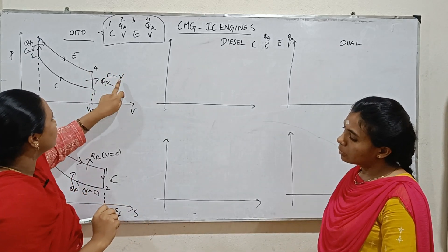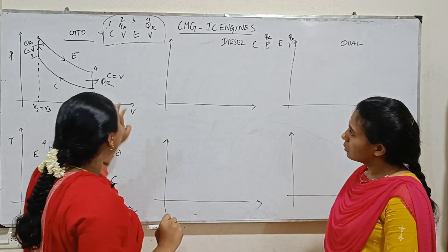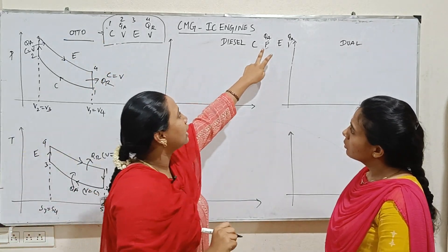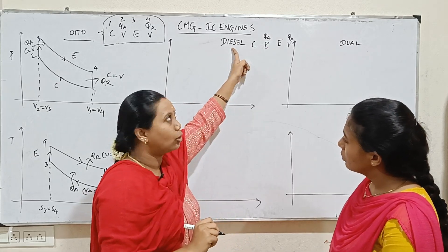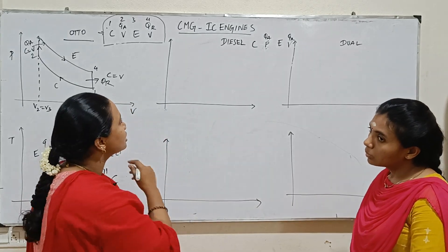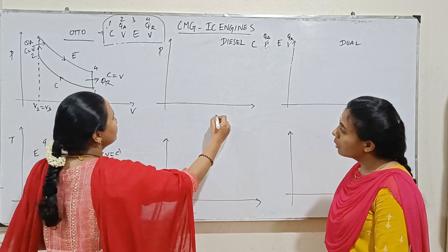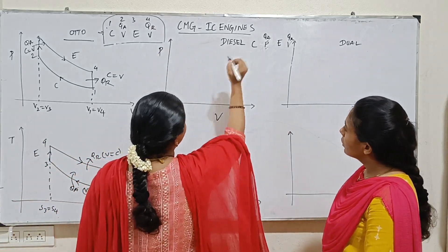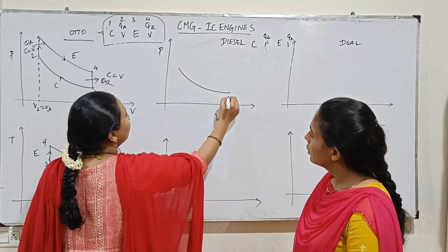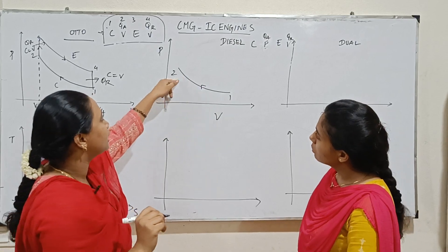In the Diesel cycle, heat addition is at constant pressure — unlike the Otto cycle where heat addition is at constant volume. Heat rejection is at constant volume. In the PV diagram, compression from 1 to 2 causes pressure to increase.